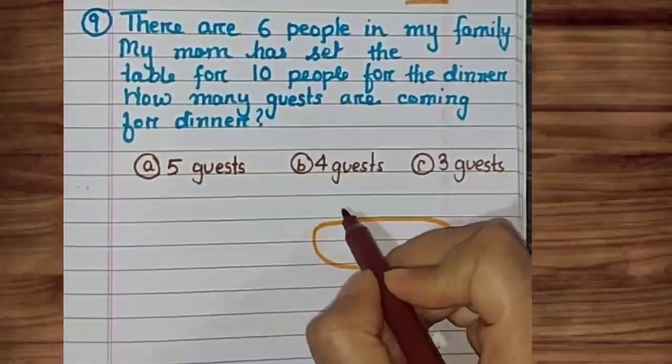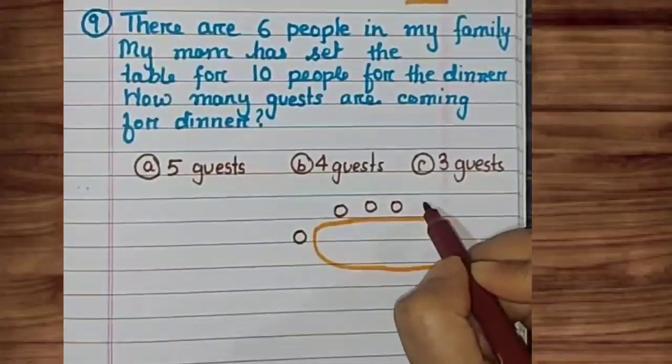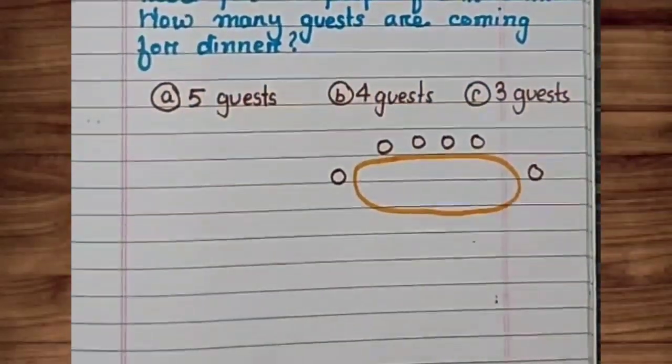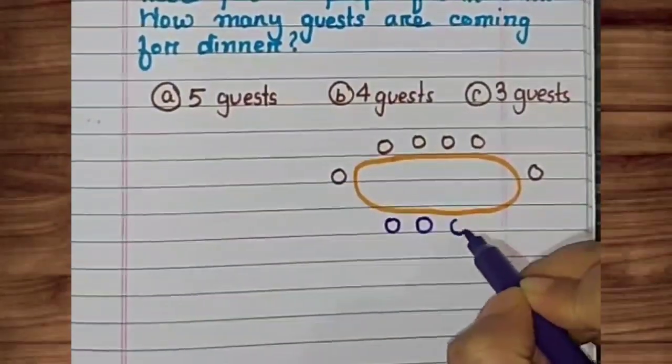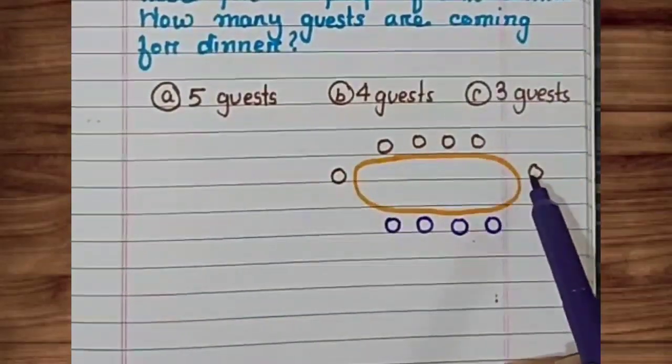This is the dining table. And there are six people in my family. And my mom has set for ten people. This means that there are ten people total.